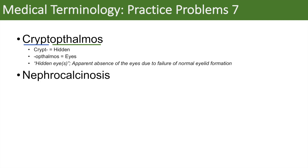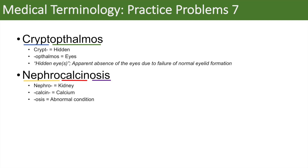The next word is nephrocalcinosis. Breaking it down: nephro means kidney, calci or calcin means calcium, and osis means abnormal condition. So it simply means an abnormal condition of calcium deposits in the kidney. That's a pretty easy word — nephrocalcinosis.